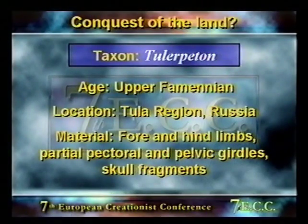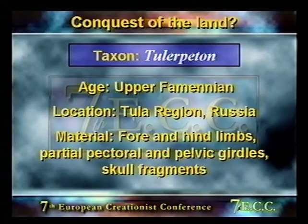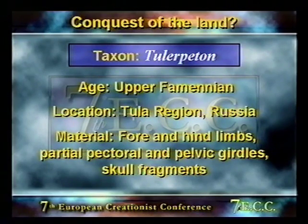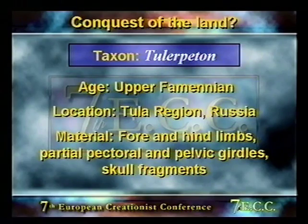Let's briefly review the main tetrapod genera. There are now eight genera known. Beginning with Tulerpeton — the youngest stratigraphically of the Devonian tetrapods — it consists of fore and hind limbs, incomplete pectoral and pelvic girdles, and skull fragments found in the Upper Famennian in Moscow. We've mentioned its six digits.